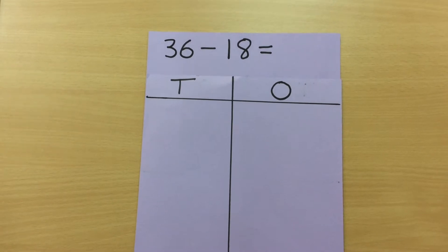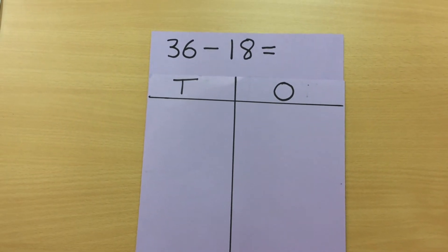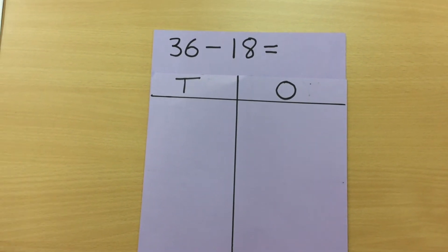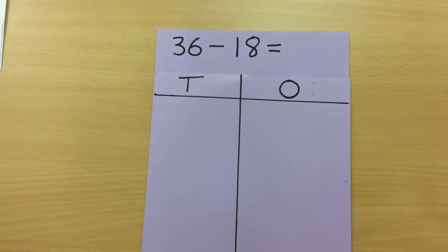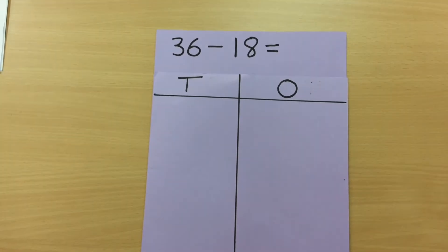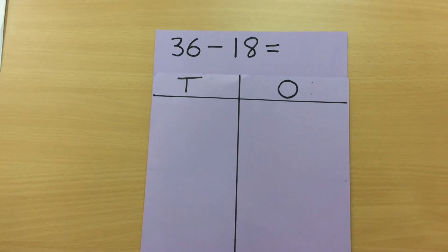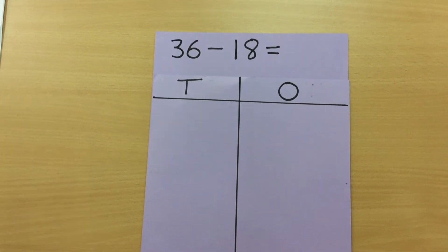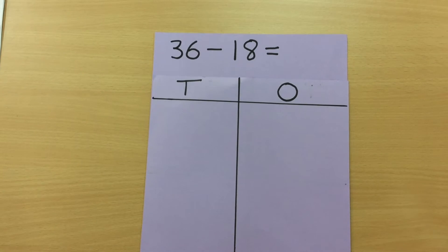Continuing with subtraction in year two, once the children have mastered two digit take away two digit using the equipment, they will then go on to just writing it or drawing it in their books. Once that is secure in their knowledge, then we move on to needing to exchange or cross the tens.